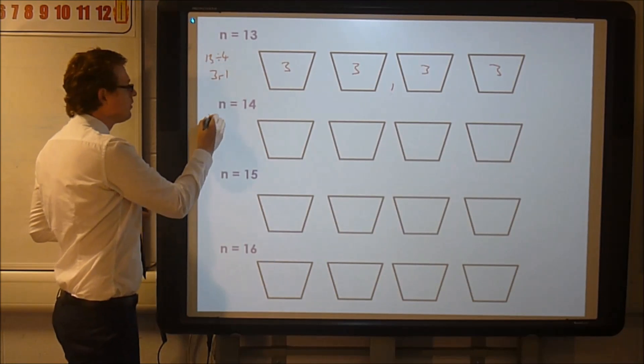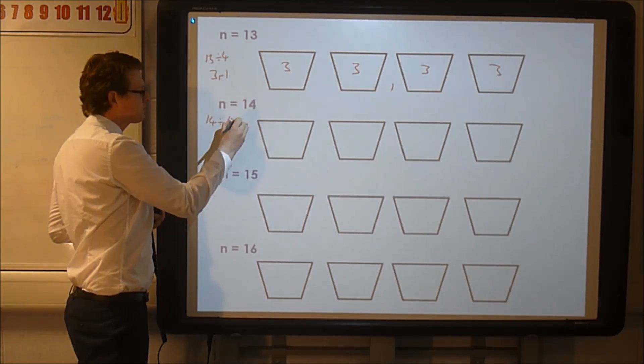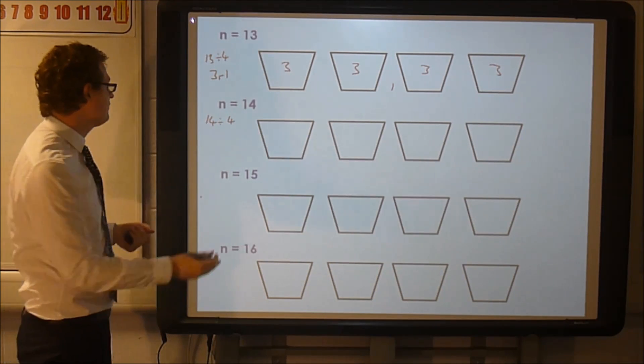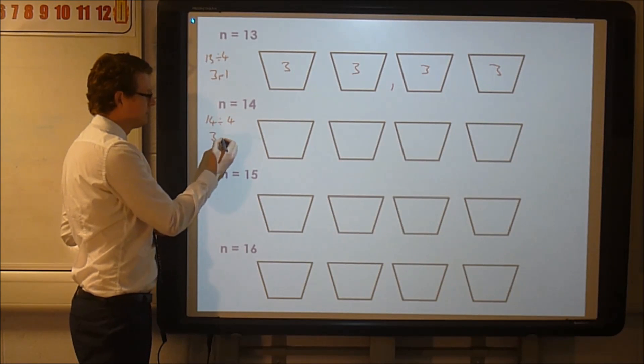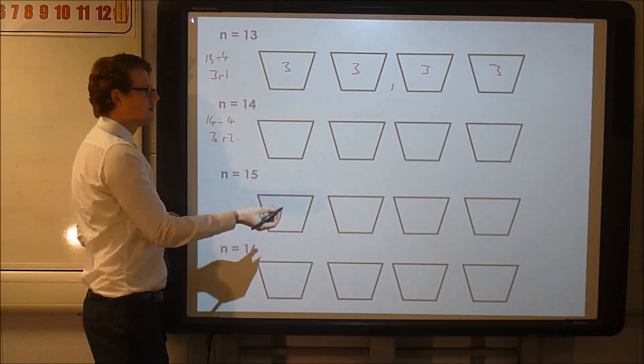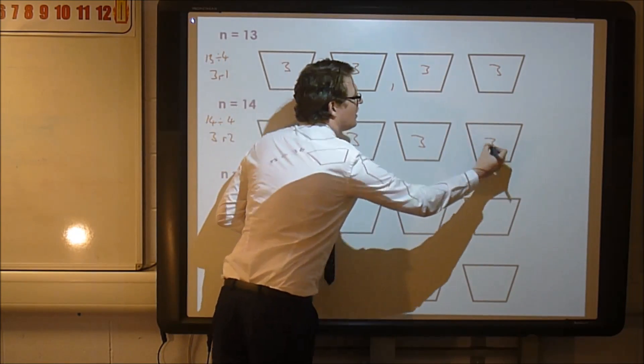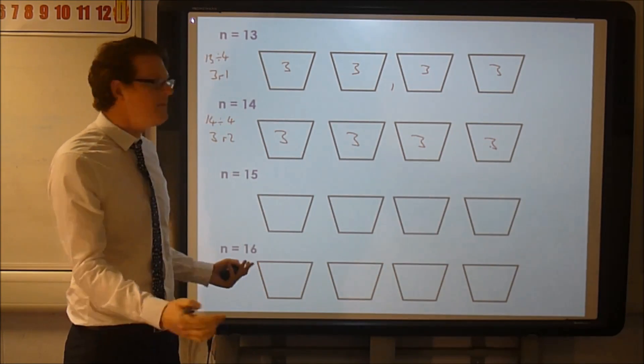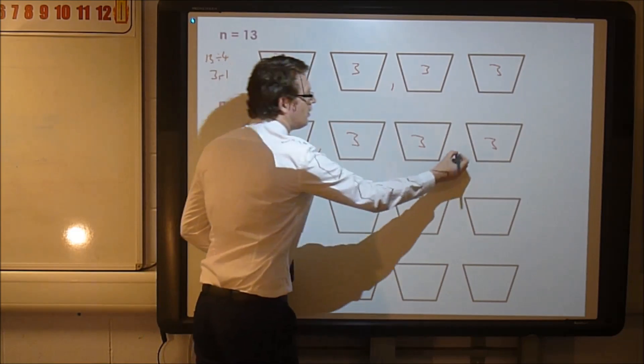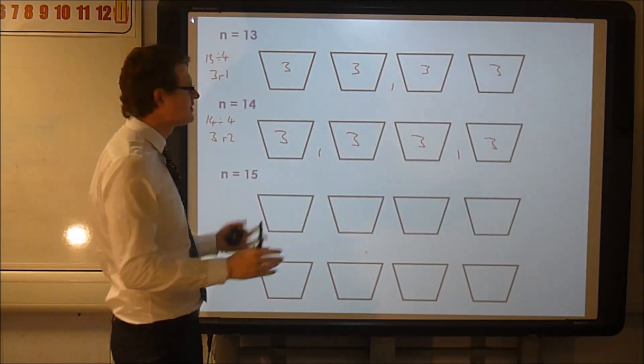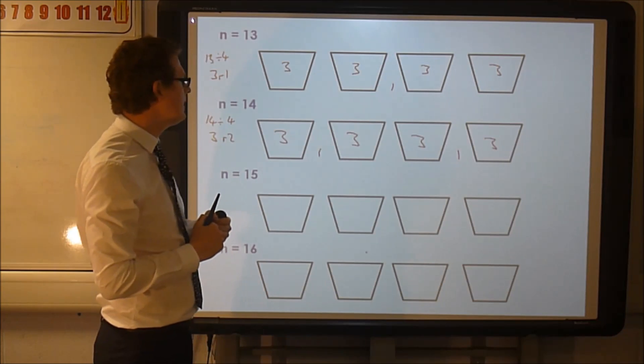And that's the spare one we put there. And if n is 14, 14 divided by four will be three and two left over. This time I'll put the three in each box. And I've got two left over. Well I think it makes sense if I put the two spare ones, one there and one there, that will kind of share them out the best and split the data the best.